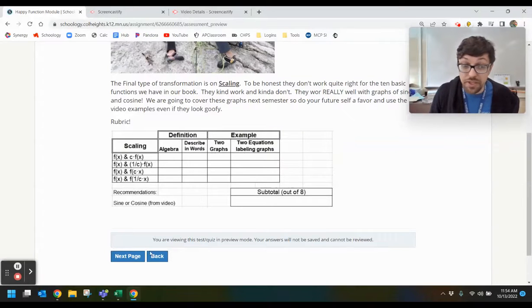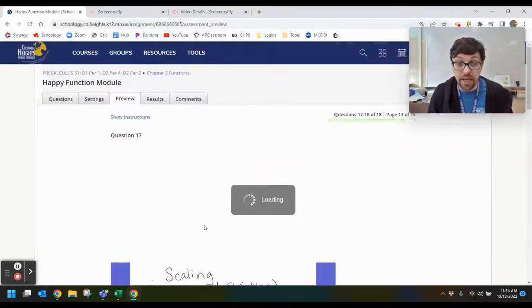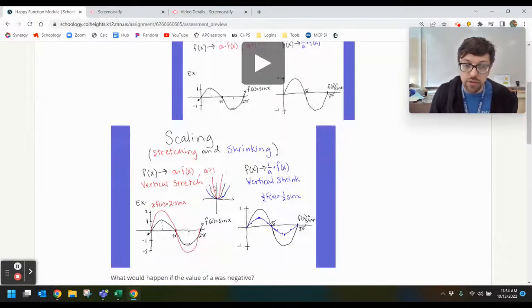The final type of transformations is scaling. This is one that I'm really going to encourage that you use the examples that I'm giving you here. Vertical stretch and vertical shrinks don't really make a lot of sense in terms of a lot of functions, but these functions of sine really do work well.